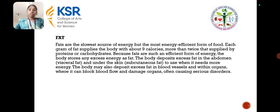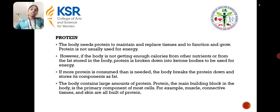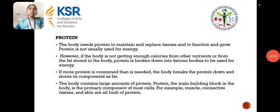The body may also deposit excess fat in the blood vessels and within the organs, where it can block blood flow and damage the organs, often causing serious disorders. Regarding protein, the body needs protein to maintain and replace tissues, and to function and grow. Protein is not usually used as energy; however, if the body is not getting enough calories from other nutrients or stored fat, protein is broken down into ketone bodies to be used for energy. If more protein is consumed than is needed, the body breaks the protein down and stores it as fat. Protein is the main building block in the body and the primary component of most cells — for example, muscles, connective tissues, and skin are all built of protein.